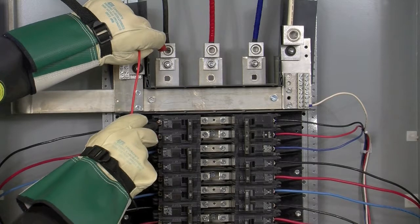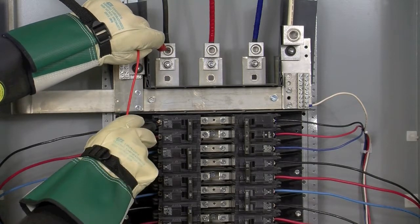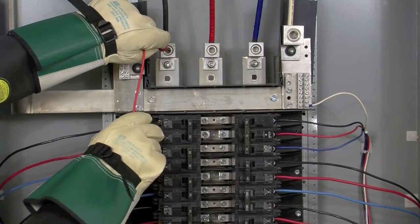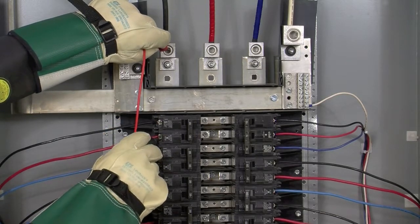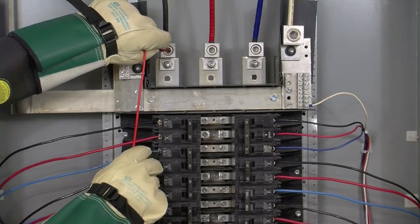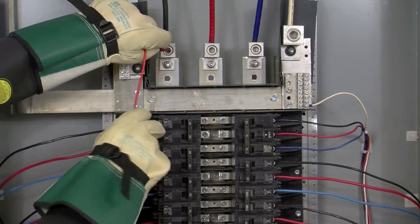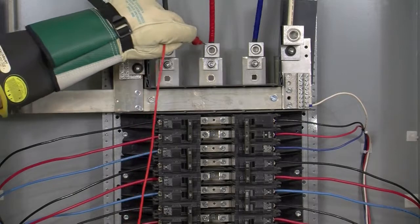If it was any other phase, we would have a voltage difference, and in a panel like this, it would be roughly 208 volts. So here we have 0 volts difference. Here we have 208, and here we have 208. Once again, here we have 0, so we know that the top pole here is phase A. Moving on to phase B.